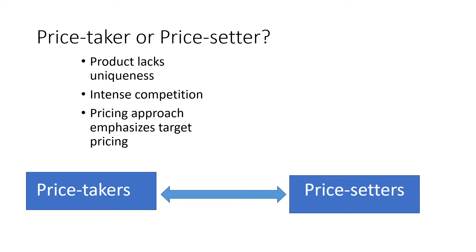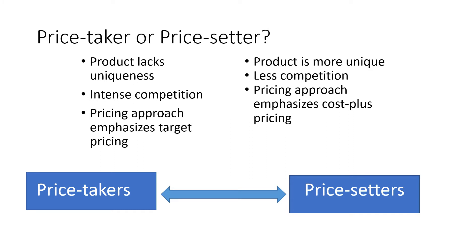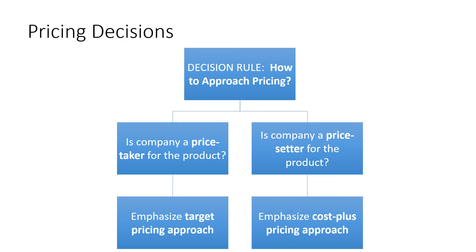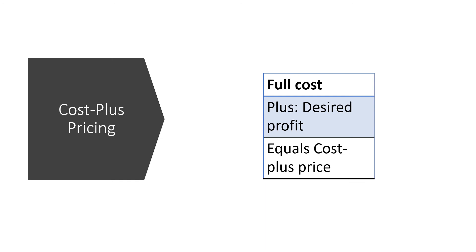To determine whether you are a price taker or price setter, look at uniqueness and level of competition, then decide your pricing approach. If you are a price setter offering a unique or differentiated product, you have the luxury of using the cost-plus pricing approach. In cost-plus pricing, you look at your full cost — which includes fixed and variable costs — add your desired profit as given by management, and that gives you your selling price.